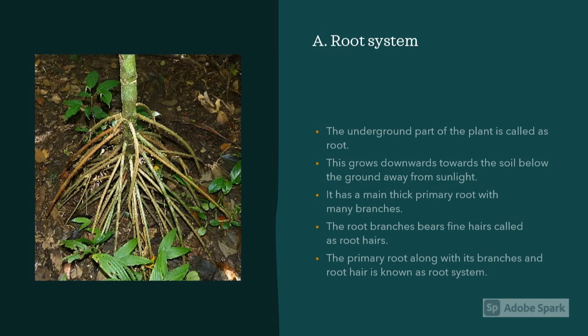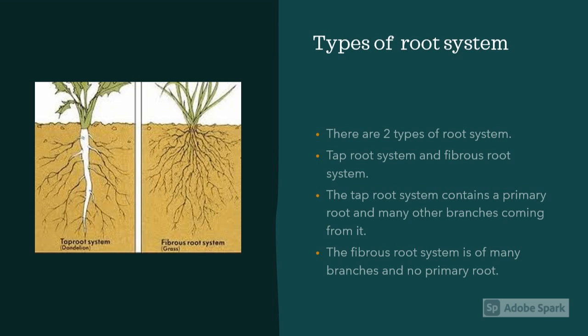Root system. Root is an underground part of the plant which grows below the soil. It helps in anchoring the plant in one place and also helps in absorbing the water and nutrients from the soil. There are two types of root system: tap root and fibrous root. Tap root contains a thick primary root with many branch roots coming through it, but fibrous root on the other hand doesn't contain any primary root and contains many branch roots.